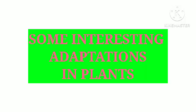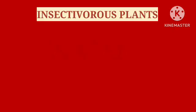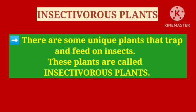Some interesting adaptations in plants: there are some plants that trap and feed on insects. These plants are very unique and are called insectivorous plants. Their leaves are modified to trap insects.